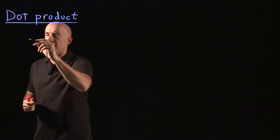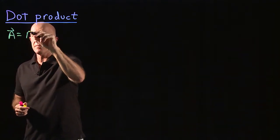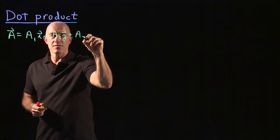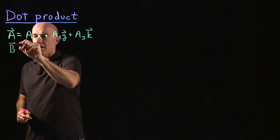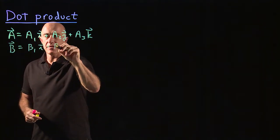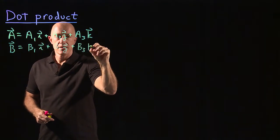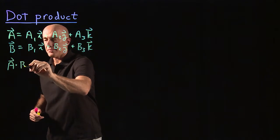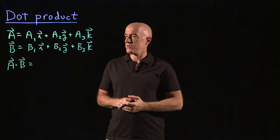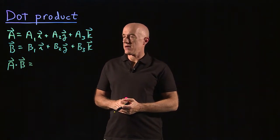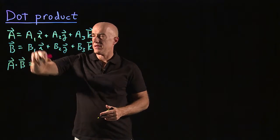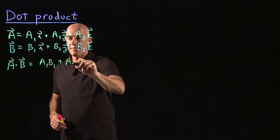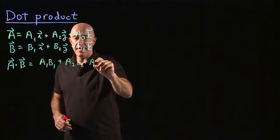Let's look at the vectors. Vector A, written in component form, is A1i plus A2j plus A3k. And B, in the same form, is B1i plus B2j plus B3k. The dot product A dot B is a scalar product. You multiply the components A1B1, A2B2, and A3B3 and then add them: A1B1 plus A2B2 plus A3B3.